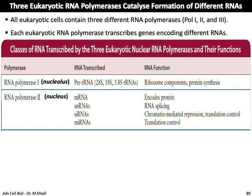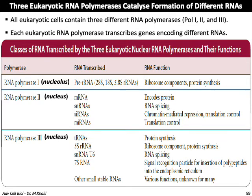RNA polymerase II transcribes messenger RNA, small nuclear RNAs, short interference RNAs, and micro RNAs, and the function of each is shown in the table. RNA polymerase III is also located in the nucleus and is involved in the transcription of transfer RNA, 5S ribosomal RNA, small nuclear RNA U6, the 7S RNA, and other small stable RNAs. The function of each RNA type can also be seen in the table.